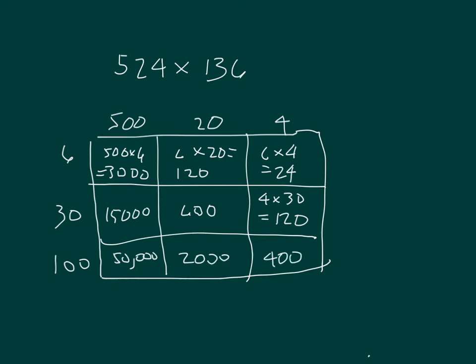Let's add those 3,144, 15,720, 52,400. And we can add them. We add up those partial products. 6, 8, 12, 2 regroup of 1, 4, 9, 11, 1 regroup of 1, and then 7. 71,264.